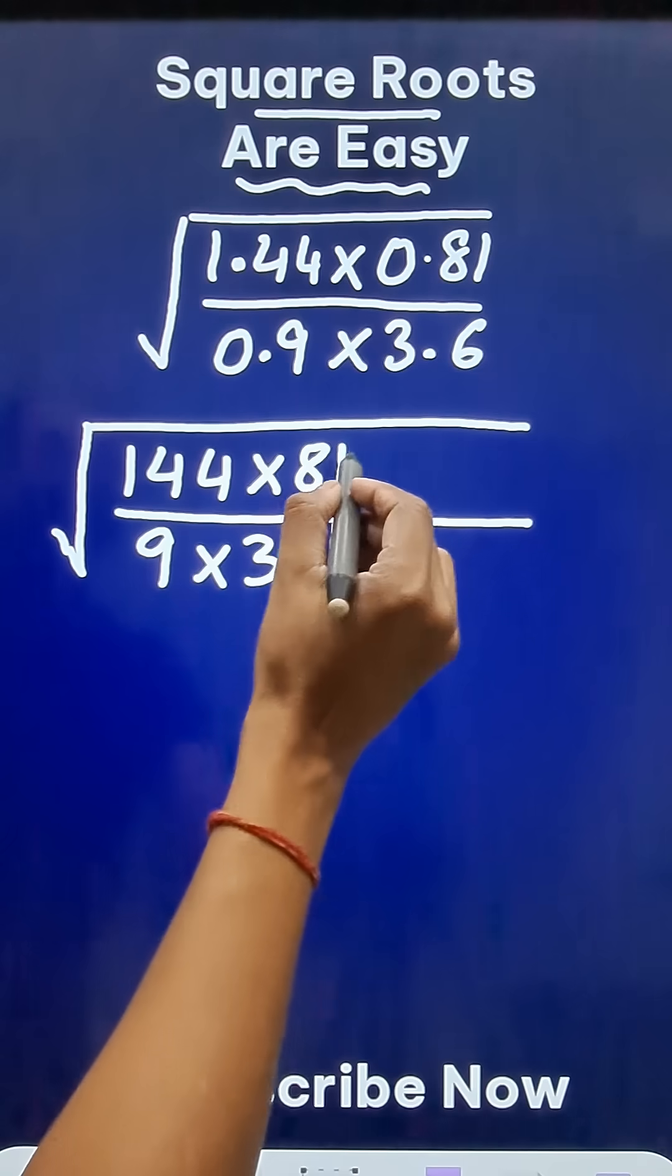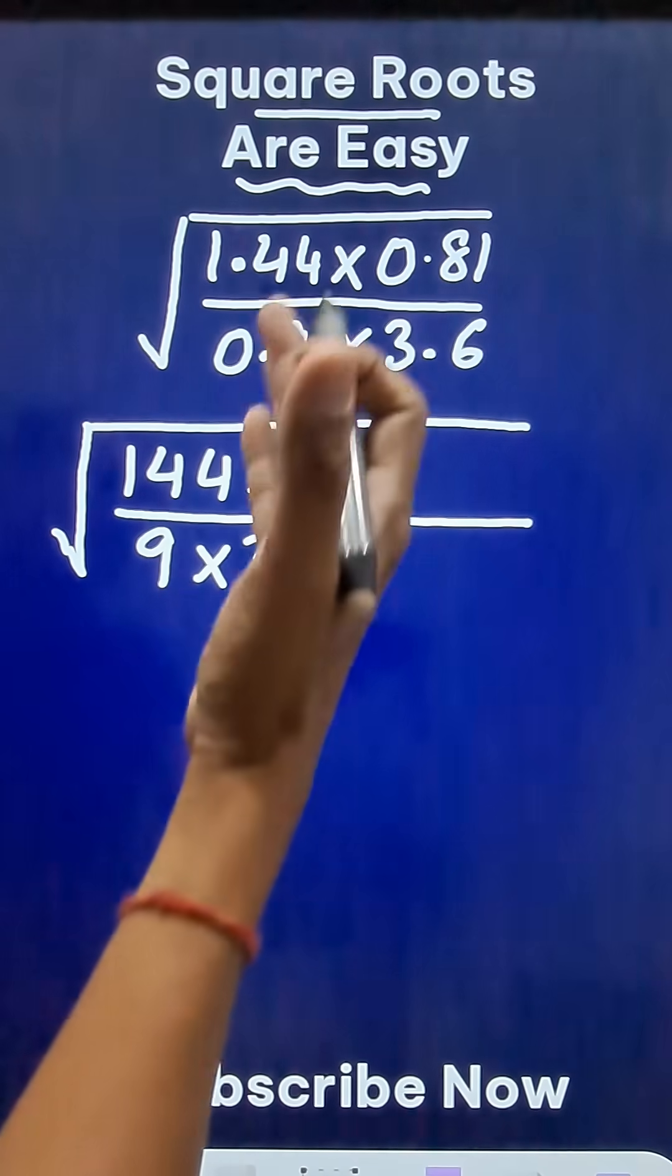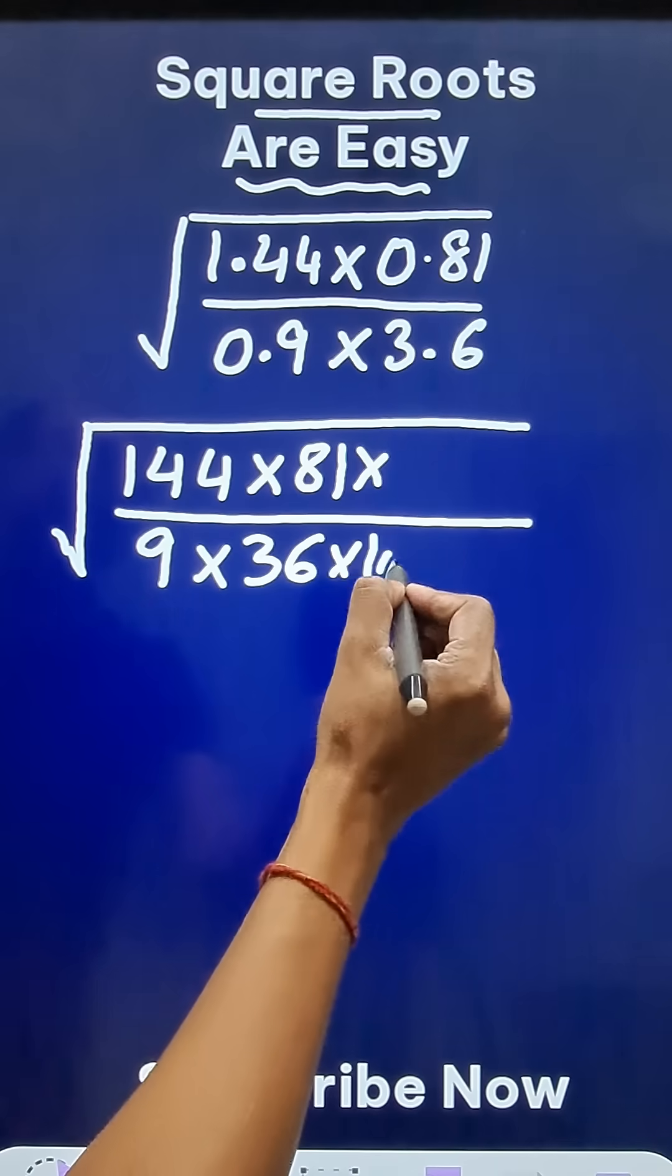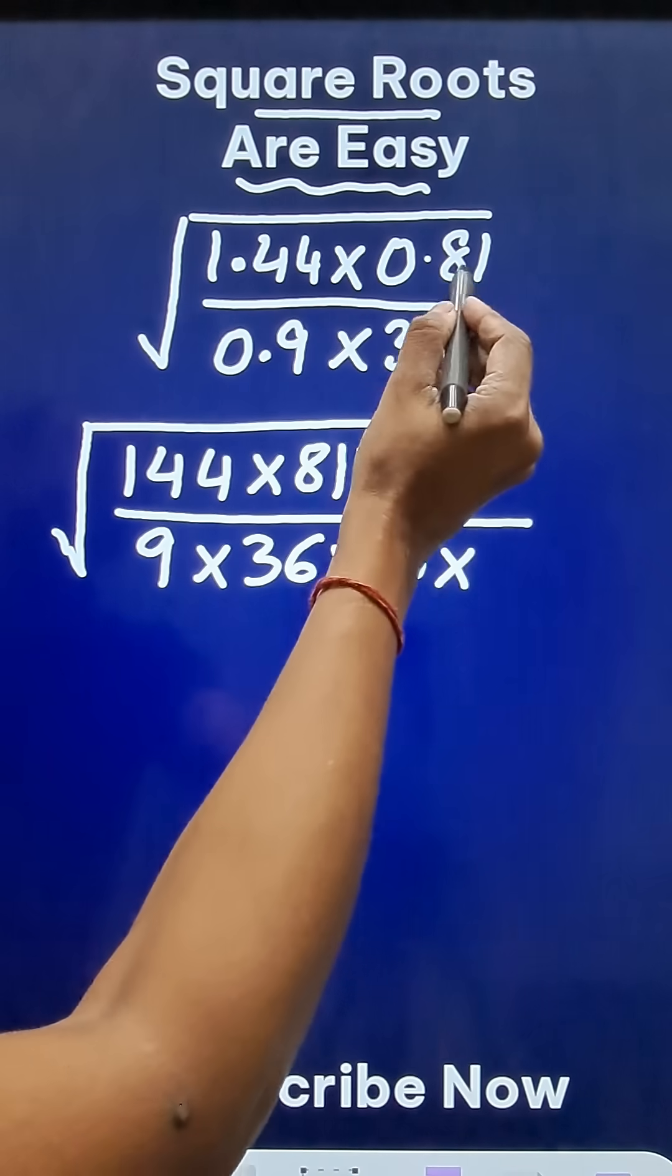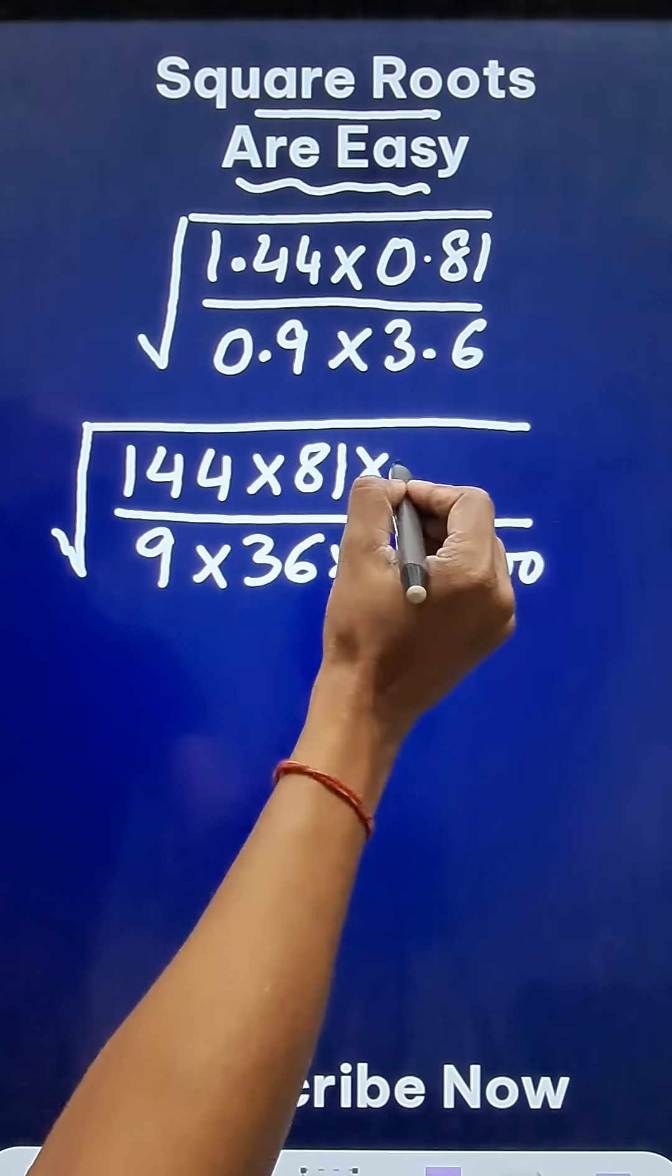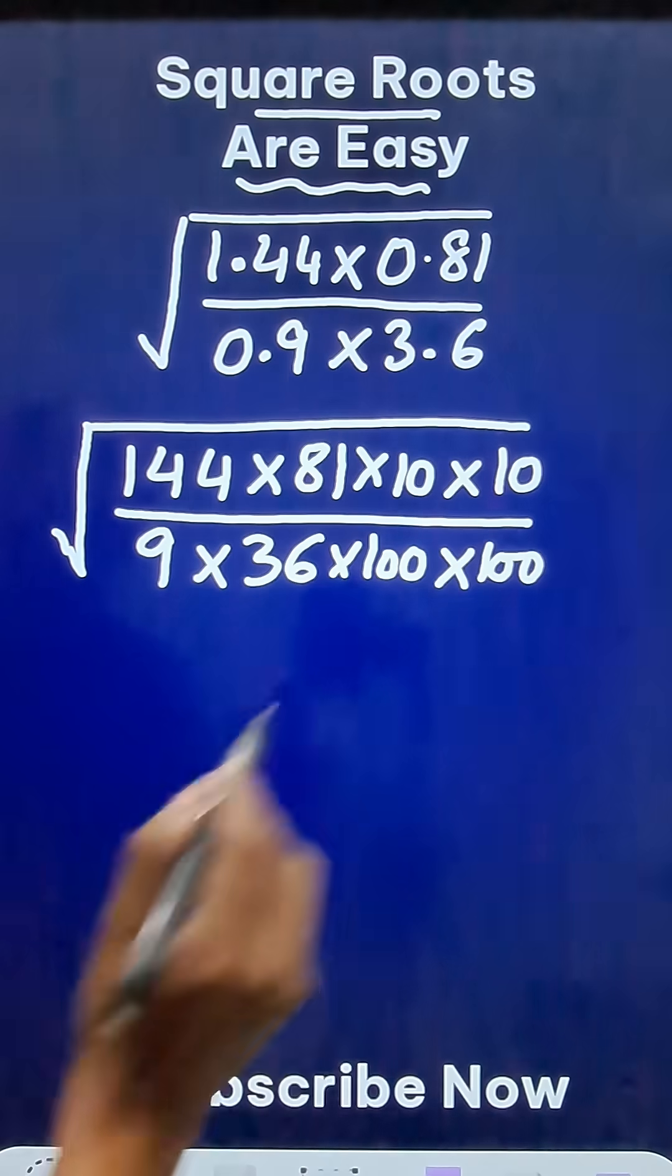But when you remove the decimals, you need to have tens, hundreds and thousands in the numerators and denominators. How? Here you have two decimal places, so we will have a 100 in the denominator. Here you have two decimal places, so another 100 in the denominator. Likewise, single decimal place here, so 10 in the numerator. And single decimal place here, so 10 in the numerator.